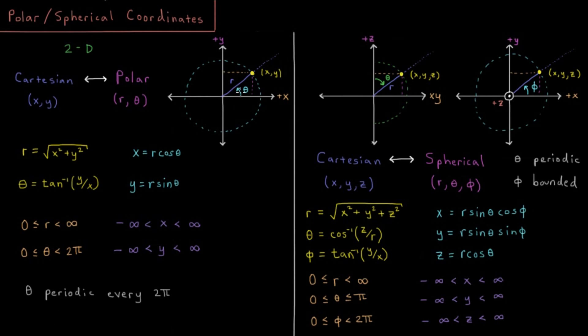And then theta, in principle we can just keep going forever. You can put in values of theta and they'll give you valid answers for x and y. But they start to become redundant after 360 degrees. They aren't giving us any new information after that. So the only unique domain of theta is to go from 0 to 2π or from 0 to 360 degrees, because theta is periodic every 2π. It repeats itself every 360 degrees.